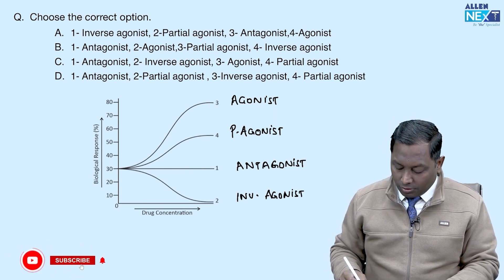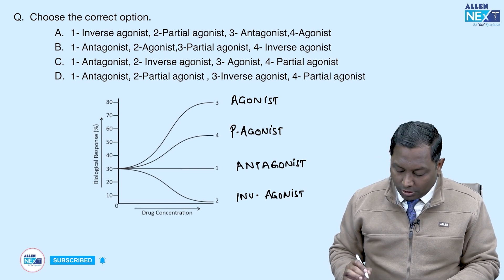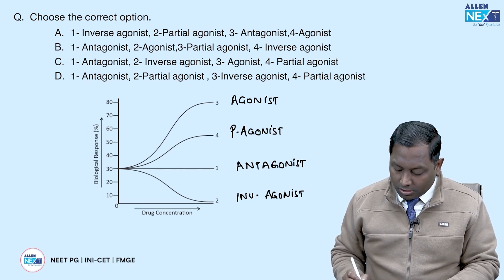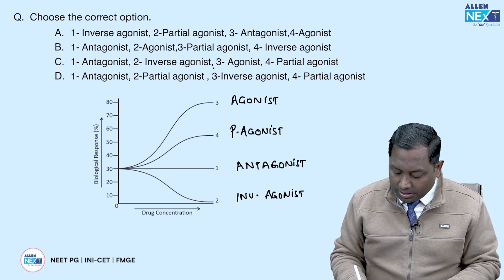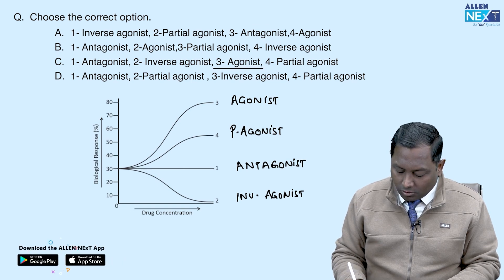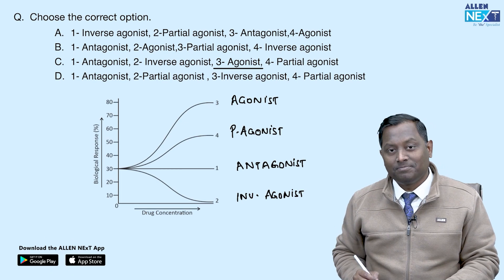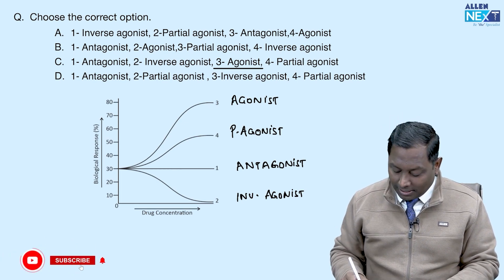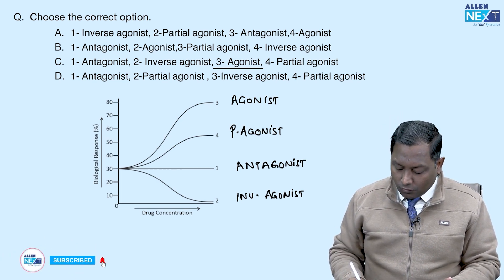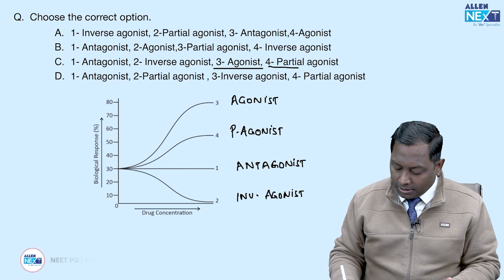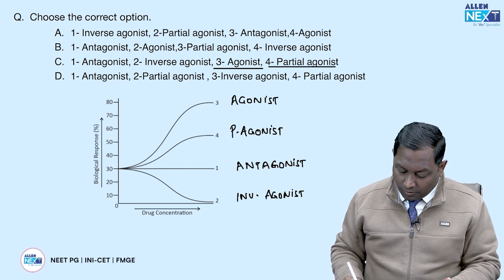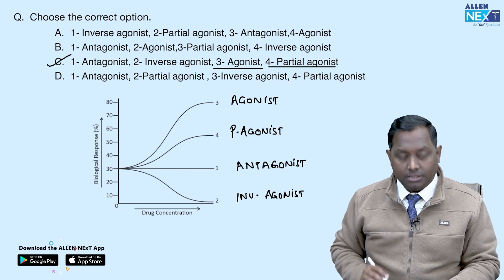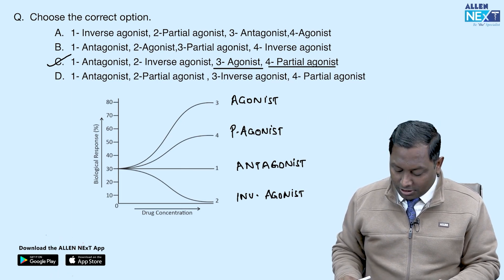Looking at the graph, number three is the agonist. If you already know number three is the agonist, look for which option pairs with it. Number four is partial agonist, and number one is the antagonist. So most likely option C is the correct answer — very easily identified.